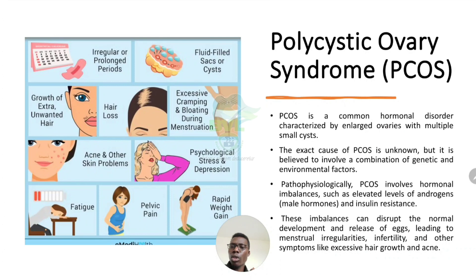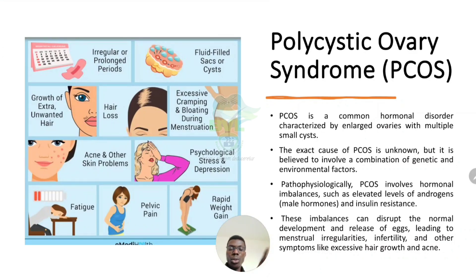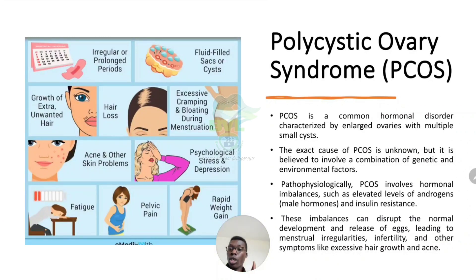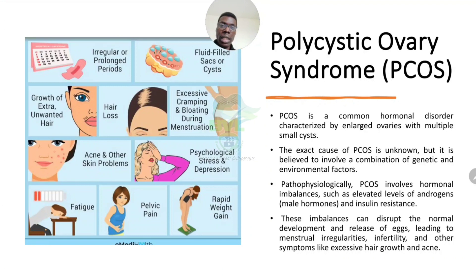The next condition, which I consider one of the most common issues, is polycystic ovarian syndrome — PCOS. It is a syndrome involving hormonal imbalances. It's not necessarily a challenge that stops life — people have it and are still fine — but it can delay reproduction in affected females due to irregularities in their menstrual cycle.